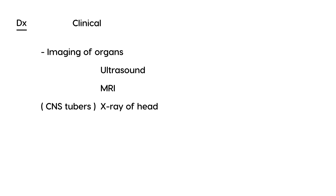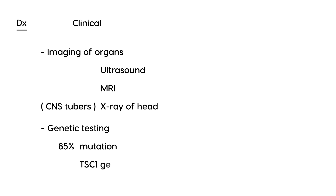Diagnosing tuberous sclerosis is difficult — a lot of it is based on clinical symptoms. If you're suspicious, you need to do imaging, which includes ultrasound, MRI, and sometimes x-ray of the head if there's CNS involvement — particularly to identify tubers in the central nervous system. There is also specific genetic testing available, because 85% of people with tuberous sclerosis have a mutation in a specific gene called TSC1.